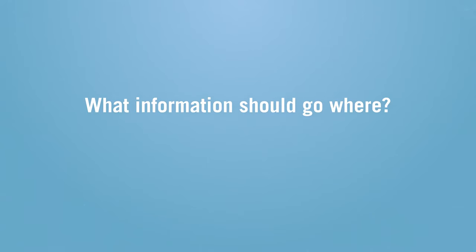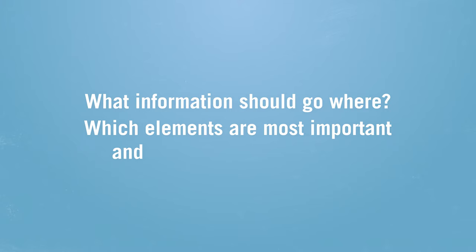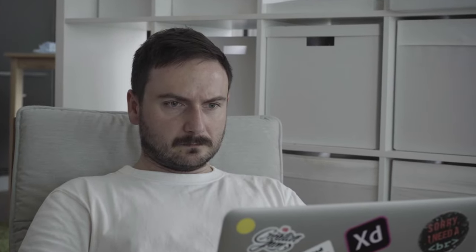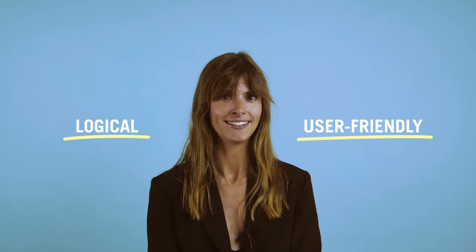Essentially, you're asking: what information should go where? Which elements are most important and should be given priority? Good information architecture contributes to a positive user experience. As consumers, we're accustomed to finding exactly what we need quickly and easily. If a site's tricky to navigate, we'll soon give up and move on. So it's absolutely crucial that the information architecture is logical and user-friendly, including making sure that each page or screen is structured in a way that makes it easier for the user to achieve their goal.